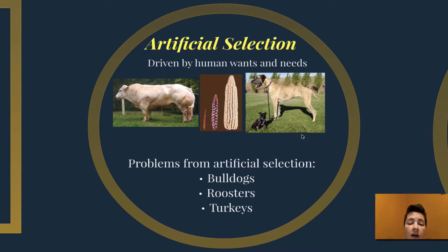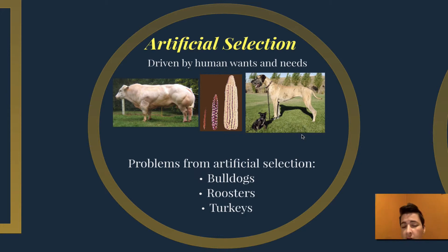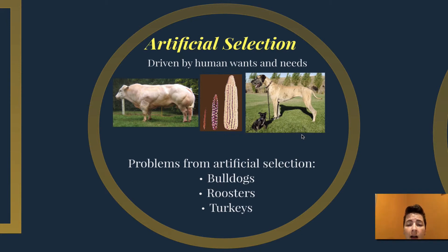Dogs are all descended from wolves, and people across the world took that wolf and selected in different directions to get different breeds. For the chihuahua, smaller and smaller wolves were chosen until we got the chihuahua. On the opposite end of the spectrum, larger and larger wolves were chosen until we got the Great Dane. Many problems have arisen from artificial selection. Bulldogs have been bred to have such large round heads that it is very rare a mother can birth her own puppies — their heads are so large they can't fit through the birth canal, requiring a c-section.